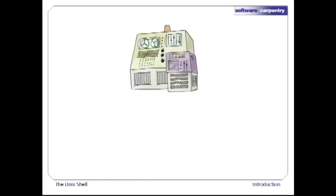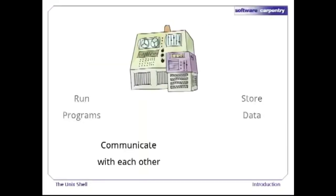At a high level, computers really do four things: they run programs, they store data, they communicate with each other, and they interact with us.